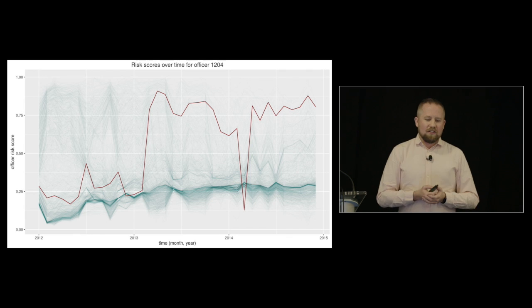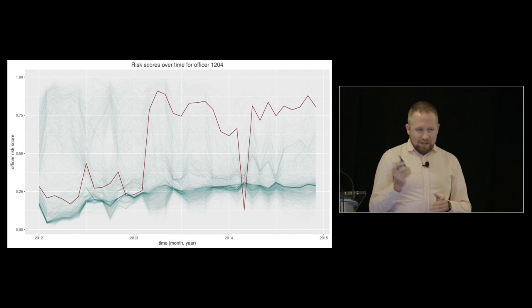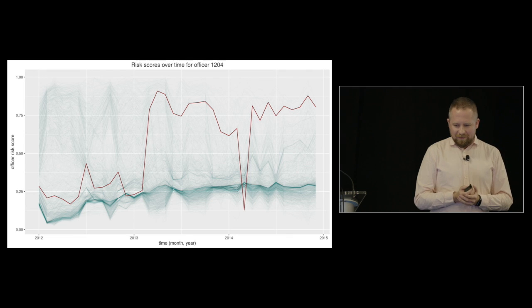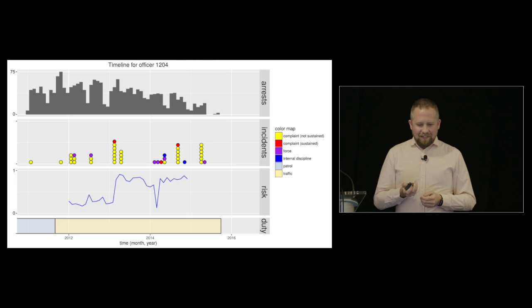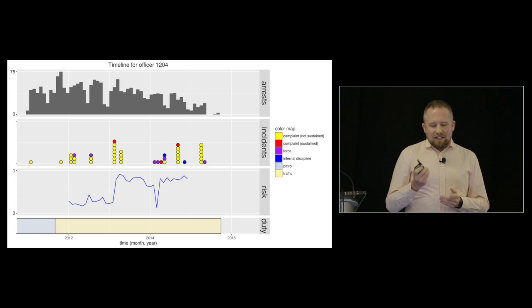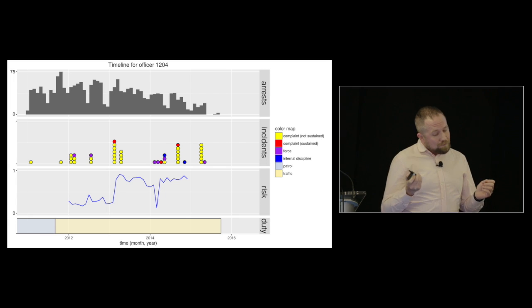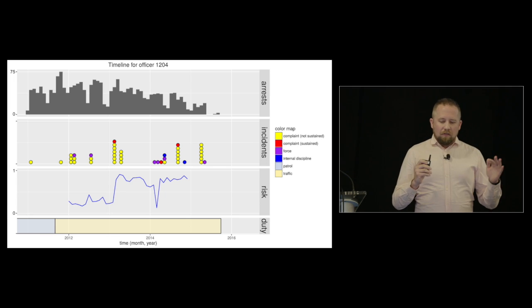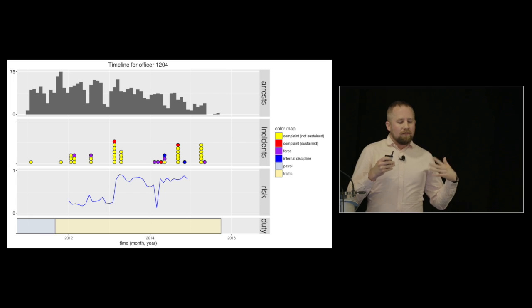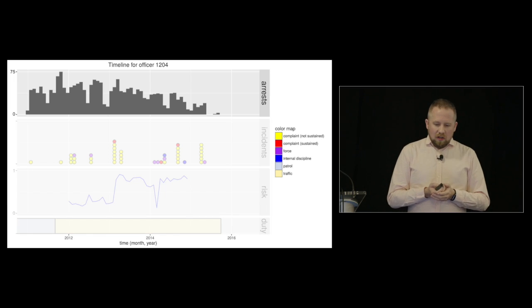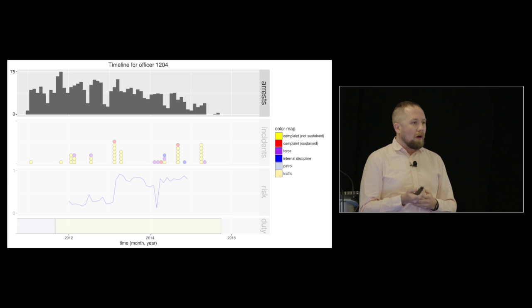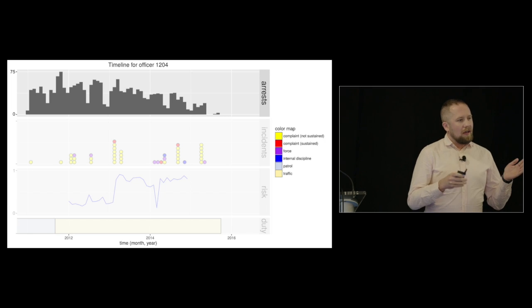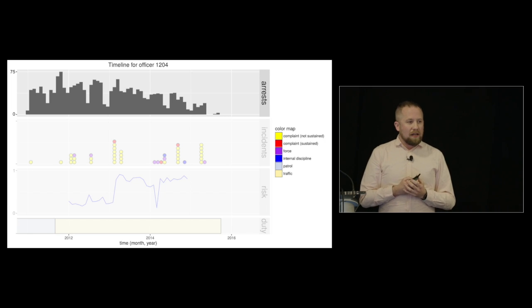So let's dig into this officer a little bit more. And so for this plot, I've broken down a number of different features of his activity over time. So at the top, we have arrests. Each bar here represents, or is a month. And then the height represents how many arrests were made in that month. And so you can get a general idea of how active they were making arrests over time.